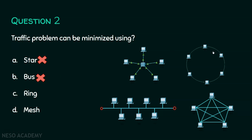Coming to the ring topology, it is a unidirectional communication and all traffic flows in one direction only. If a device wants to send data to another, it cannot send directly the short way — it must follow the ring direction. So traffic problems cannot be minimized using ring topology. Coming to the mesh topology, every pair of nodes has a dedicated line or dedicated channel. Since every pair of nodes has a dedicated link, there is no traffic problem — each communication uses its own exclusive line. Therefore, the answer is mesh topology.